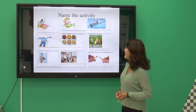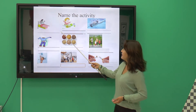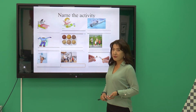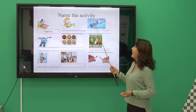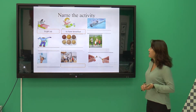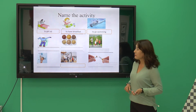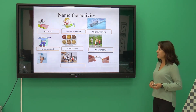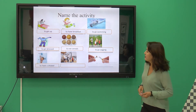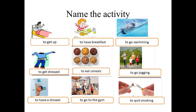You can see some pictures — all of them consist of our daily routine. Your task is to name them: to get up, to have breakfast, to go swimming, to get dressed, to eat cereals, to go jogging, to have a shower, to go to the gym, and of course no smoking. All these activities make up our correct daily routine.